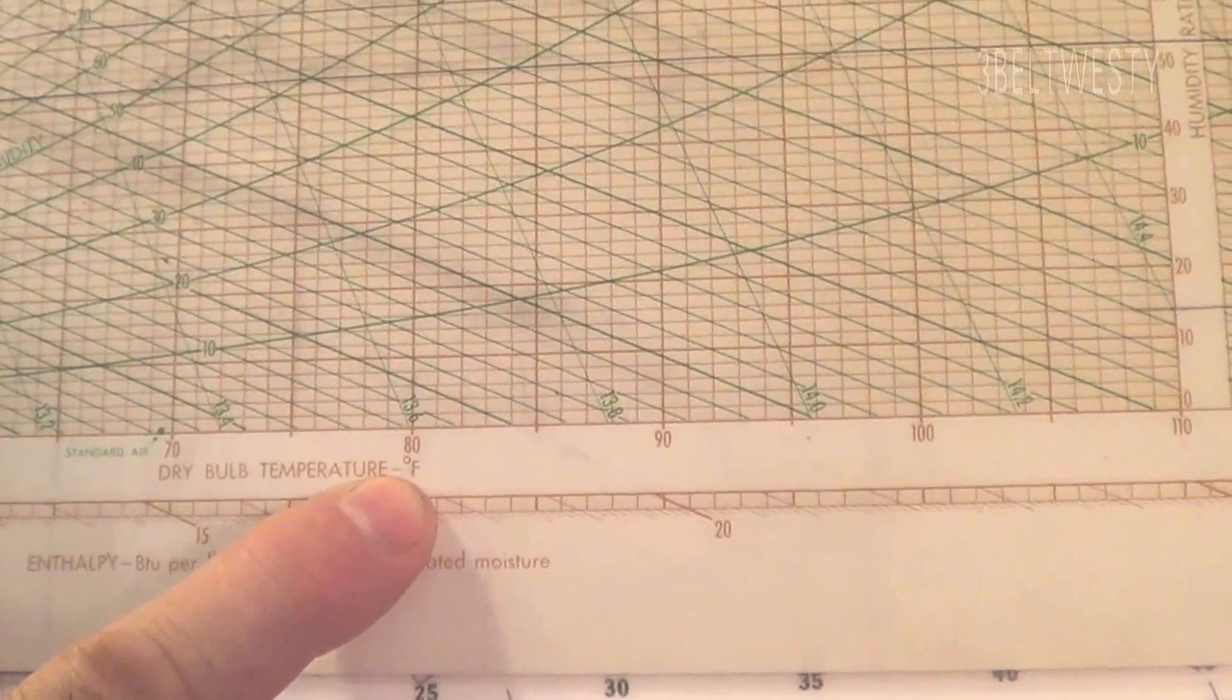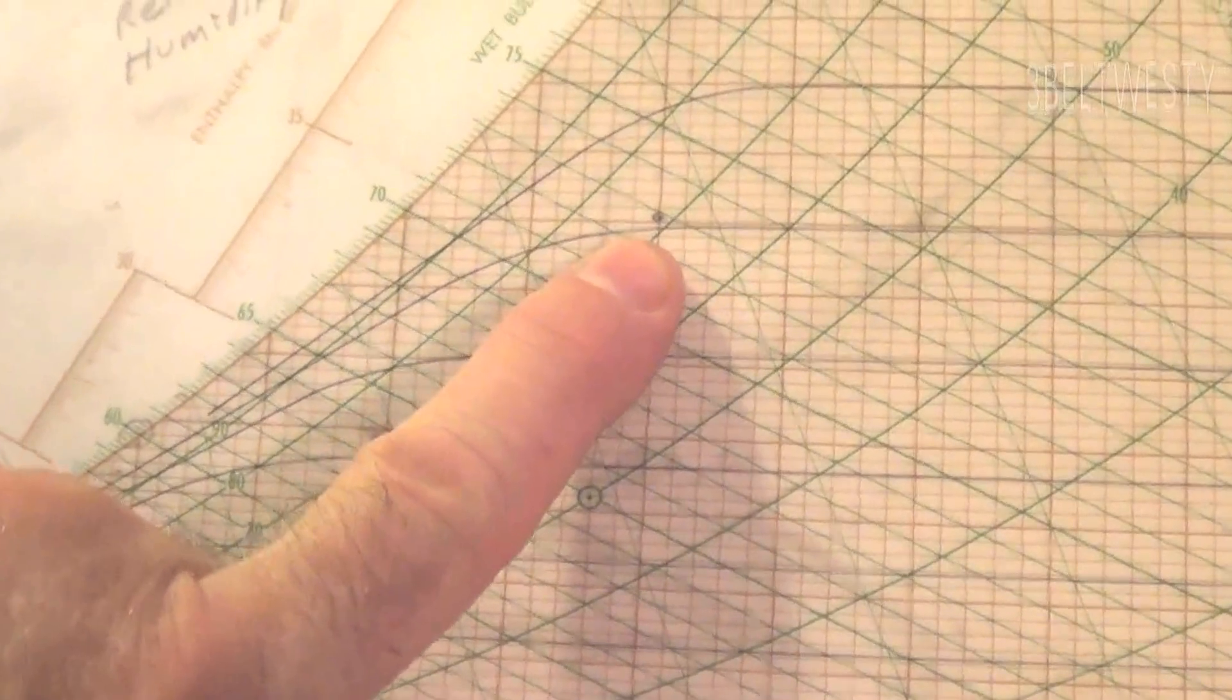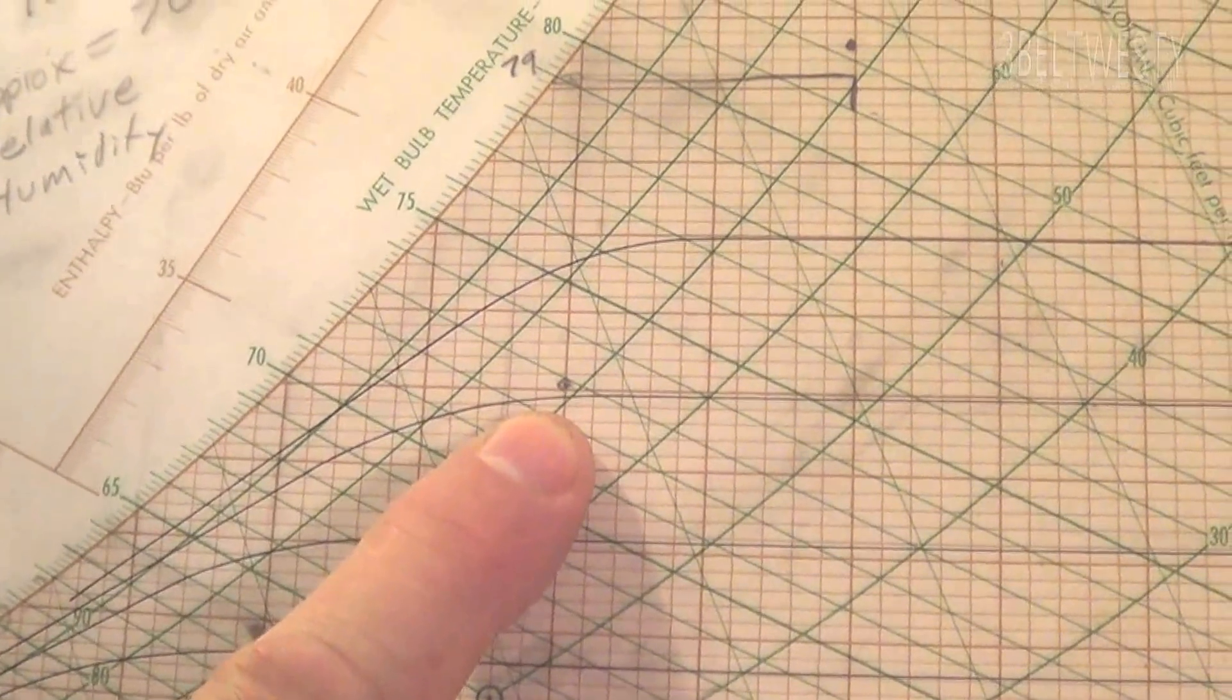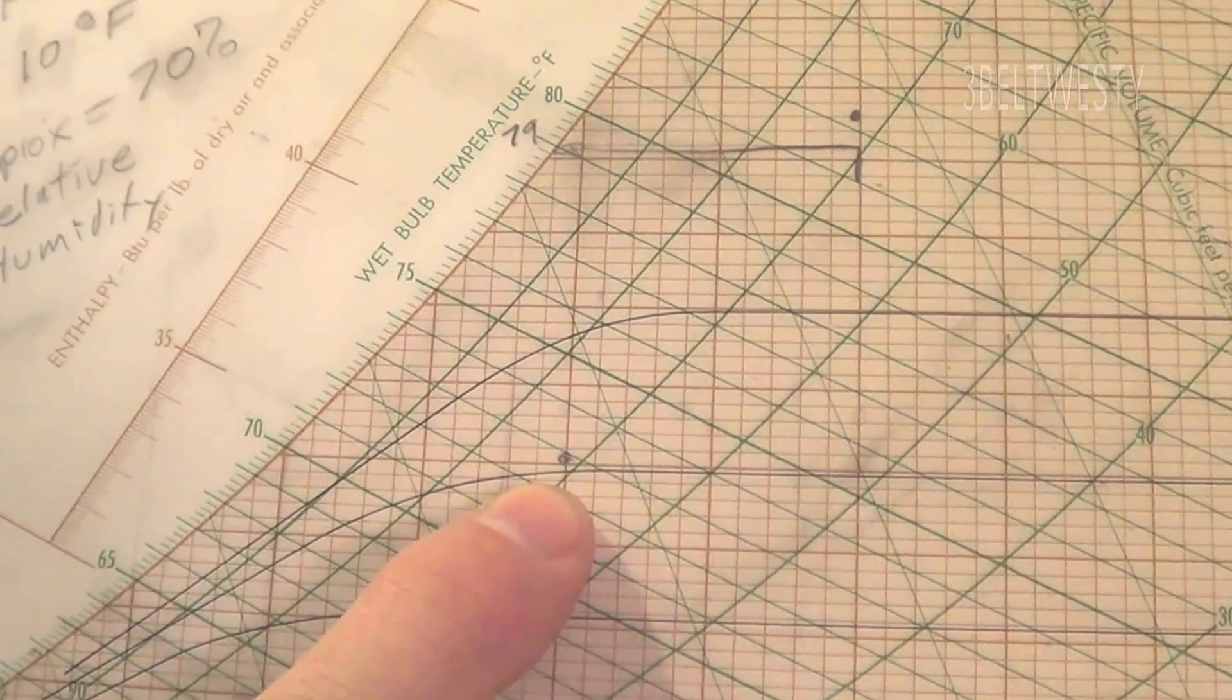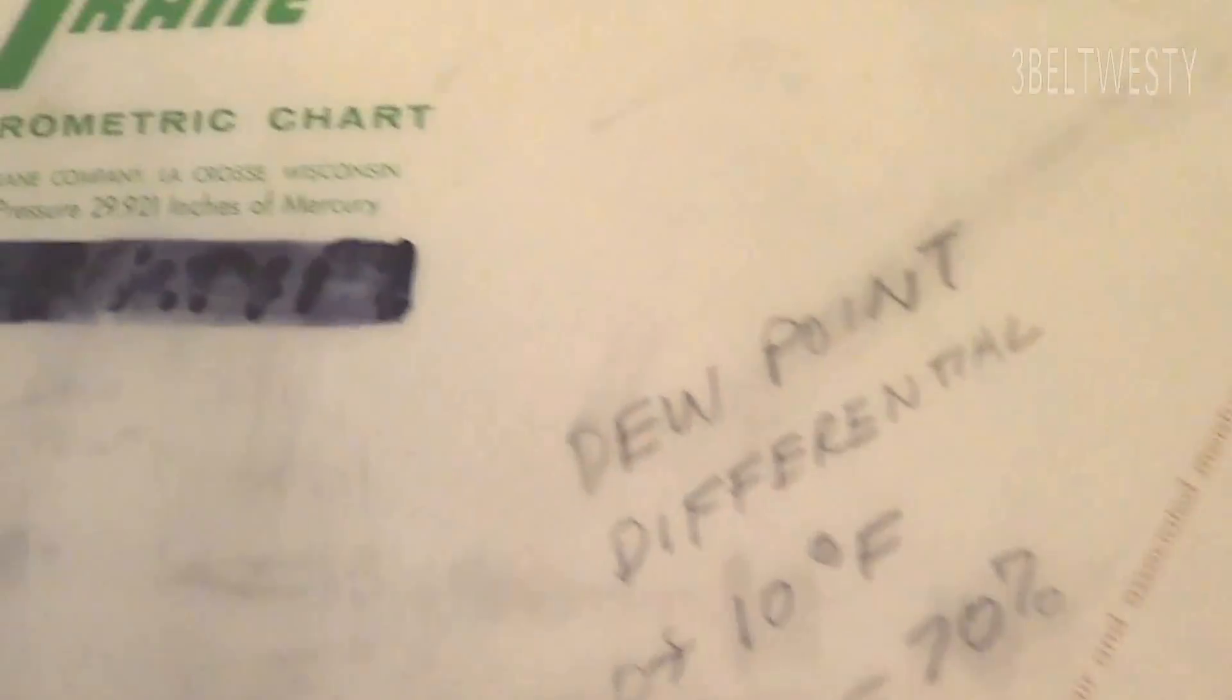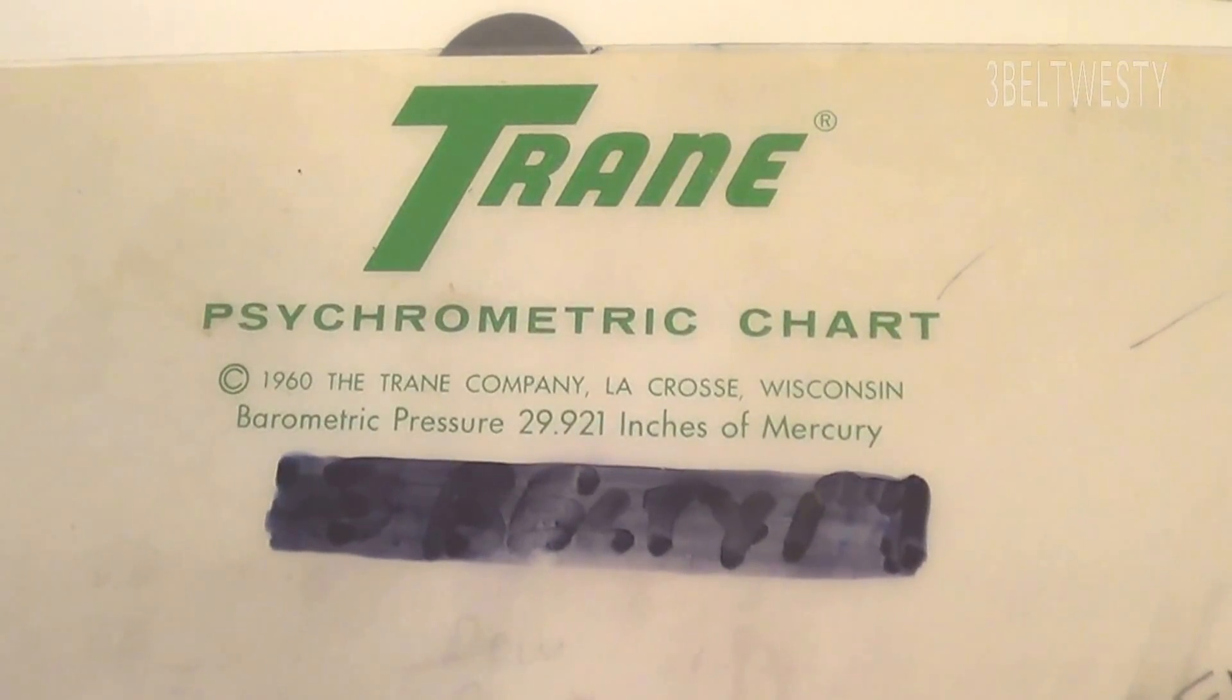So if somebody says it's 80% humidity outside and you measured the dew point and it's a 10 degree differential, it's a fairly good approximation—you're within 70% humidity. This is the Train psychometric chart from 1960, and it's in the English model.